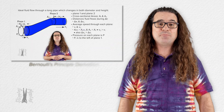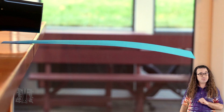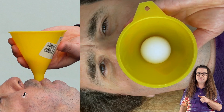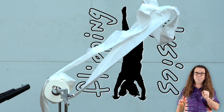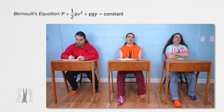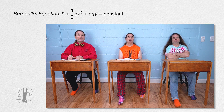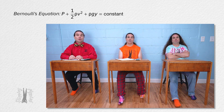Good morning. Last time we derived Bernoulli's equation. Today we are going to do seven demonstrations of Bernoulli's principle. For a fluid, pressure plus one half fluid density times fluid speed squared plus fluid density times gravitational field strength times vertical height is constant. In other words, all of those at one point in a fluid equals all of those at another point in the fluid.